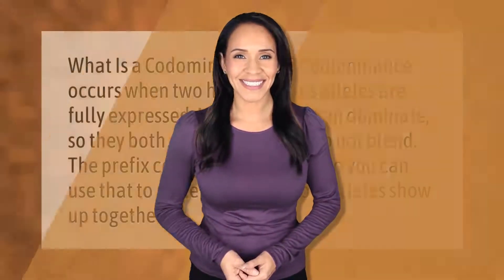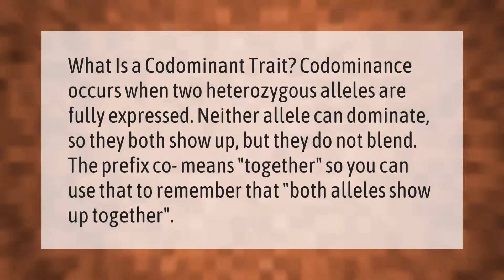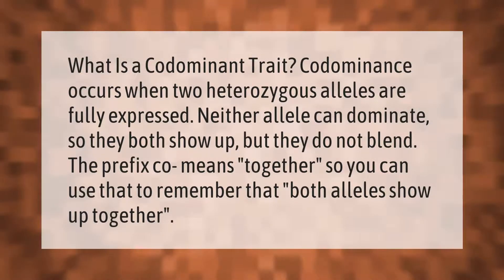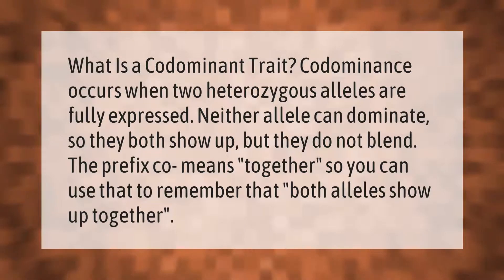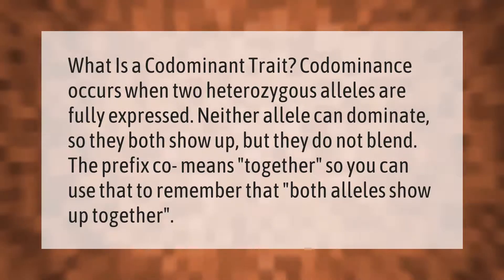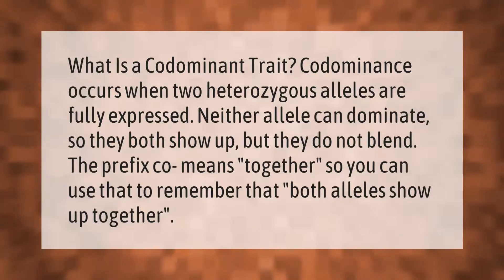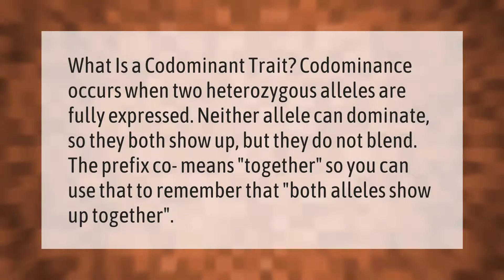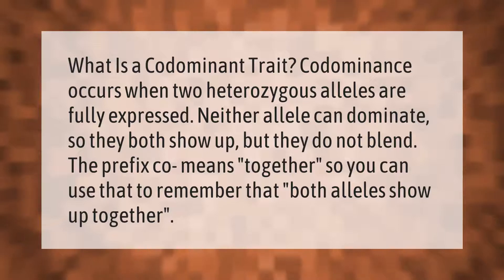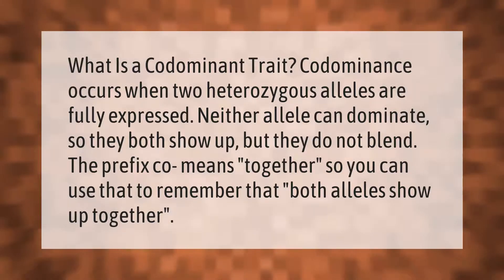What is a codominant trait? Codominance occurs when two heterozygous alleles are fully expressed. Neither allele can dominate, so they both show up, but they do not blend. The prefix 'co' means together, so you can use that to remember that both alleles show up together.